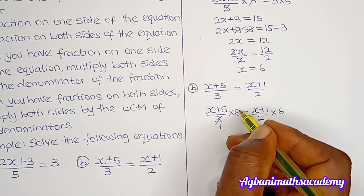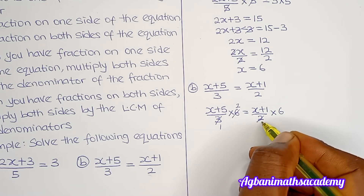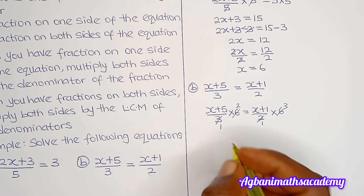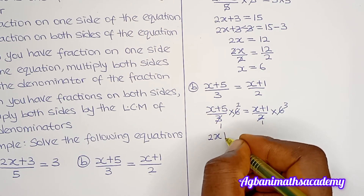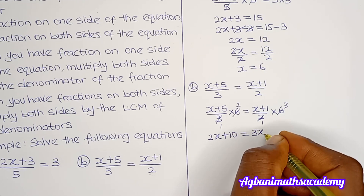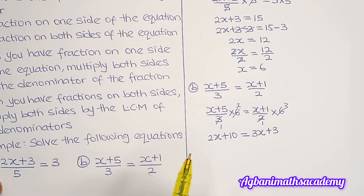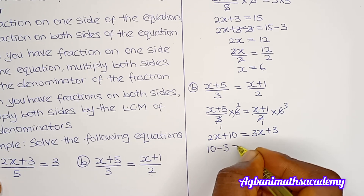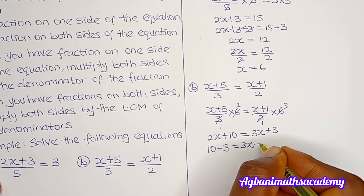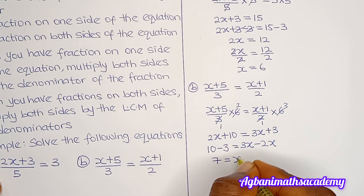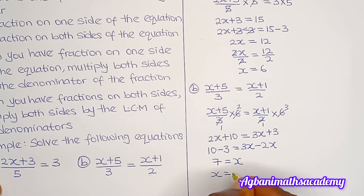On the left, 3 cancels with 6 leaving 2, so 2 multiplies (x + 5): giving 2x + 10. On the right, 2 cancels with 6 leaving 3, so 3 multiplies (x + 1): giving 3x + 3. Moving like terms together — 2x to the right and 3 to the left — we get 10 − 3 = 3x − 2x, which gives 7 = x.